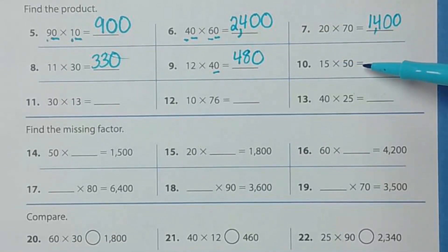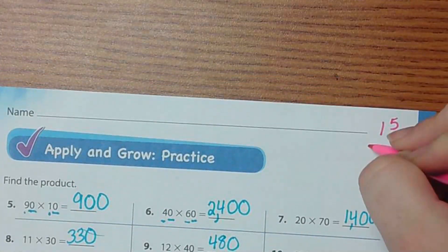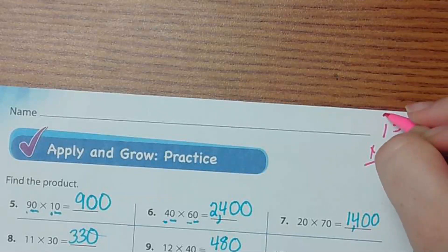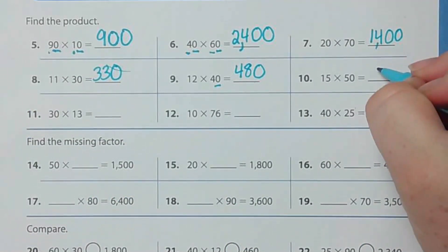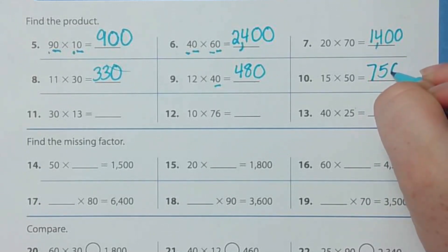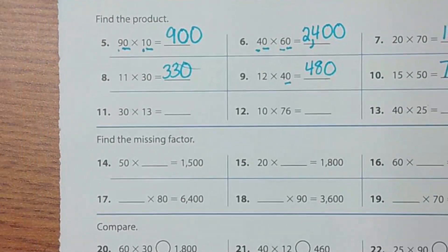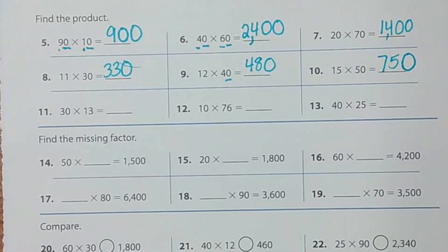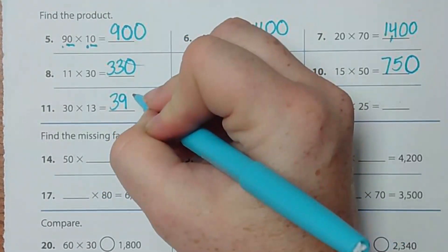Number 10: 15 times 50. What is 5 times 15? We can work it out on the side — it's 75. So 15 times 50 is 750. Number 11: 30 times 13. We know that 3 times 12 is 36, plus 3 is 39. We add one zero — the answer is 390.